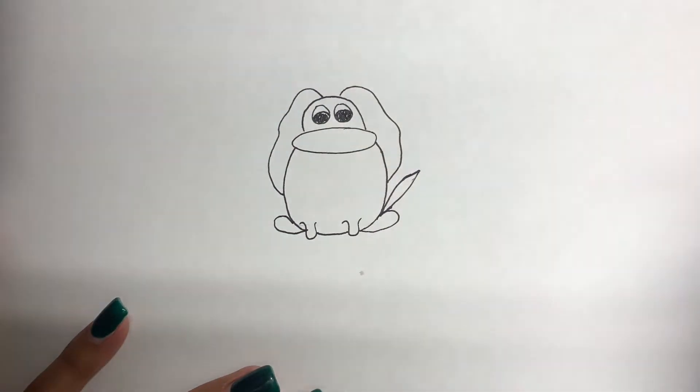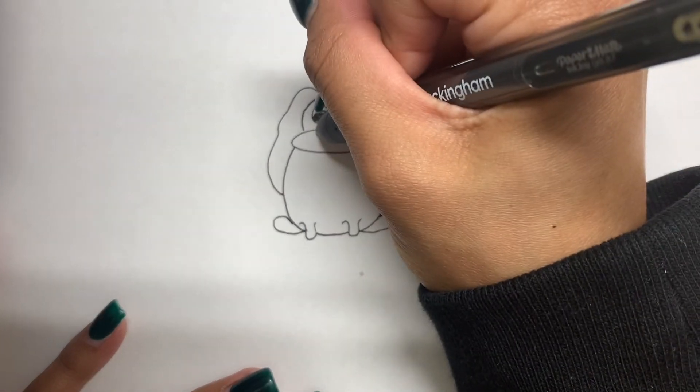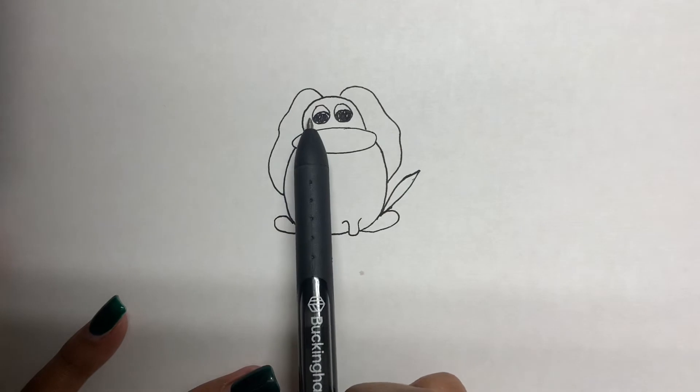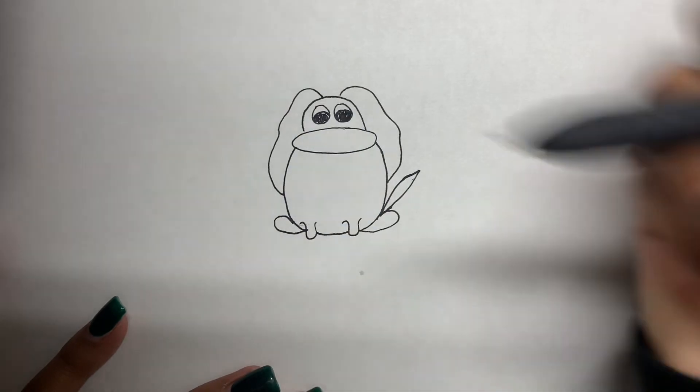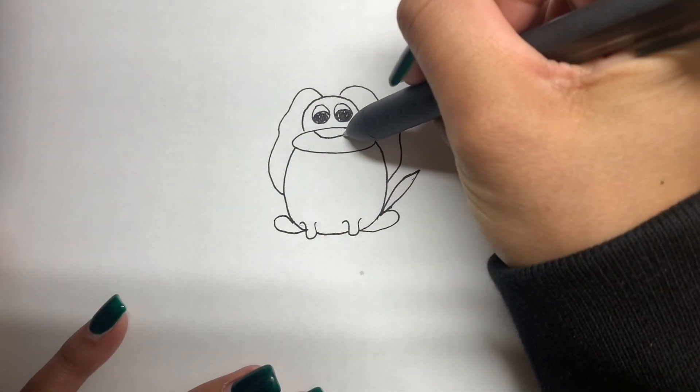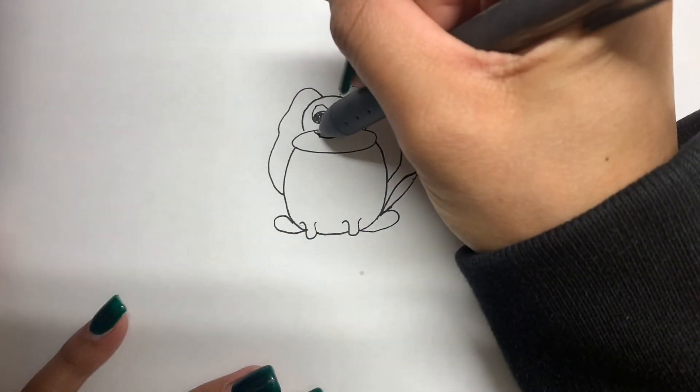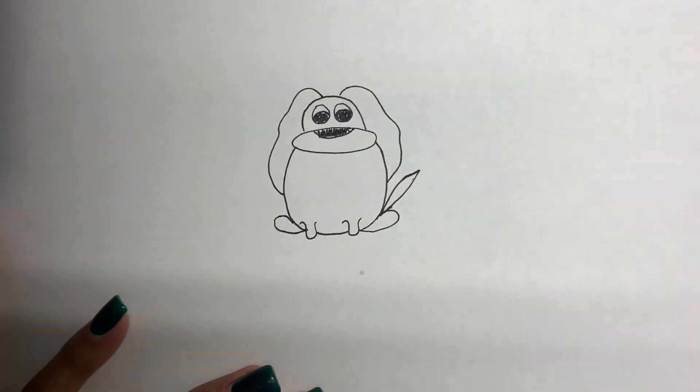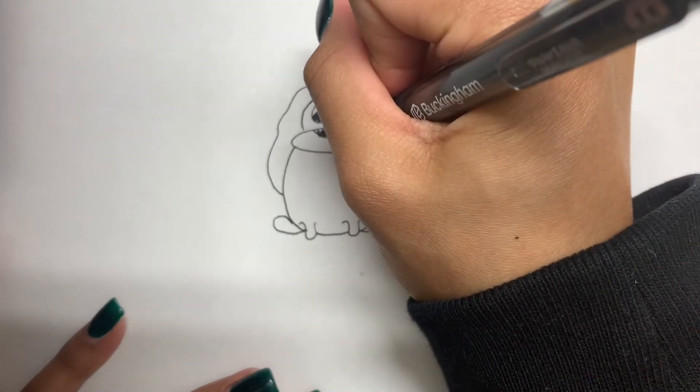So then next, we're going to go ahead and finish off the face by adding the nose and smile. So for the nose, you can draw kind of an imaginary line from the ends of the eyeballs and draw another little oval. And then you're going to go ahead and fill that in. So it's a semi-oval. And then you're going to go ahead and add a little smile just right underneath of that.